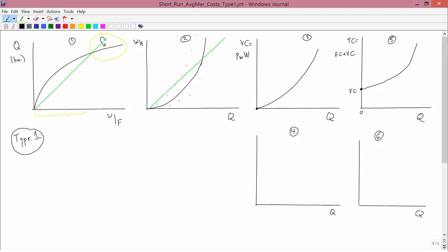The purpose of this video is to sketch graphs 4 and 6. Graph 4 is going to come from graph 3, and graph 6 is going to come from graph 5. Graph 4 is going to be the marginal and average of 3. Graph 6 is going to be the marginal and average of 5.